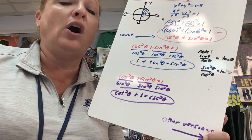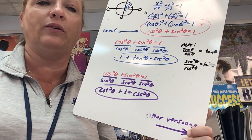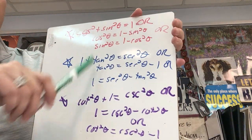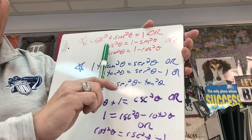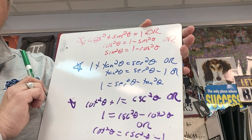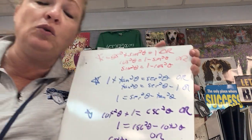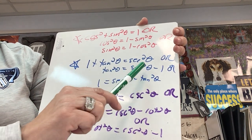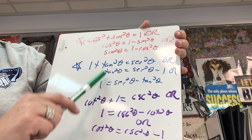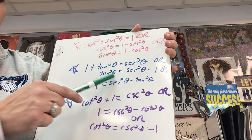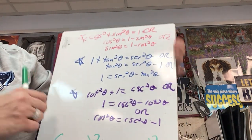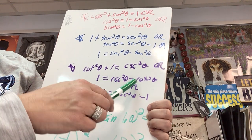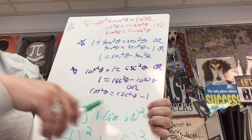We also need to recognize different versions of these identities. From cos²θ + sin²θ = 1: cosine squared equals 1 minus sine squared, and sine squared equals 1 minus cosine squared. From 1 + tan²θ = sec²θ: tangent squared equals secant squared minus 1, or 1 equals secant squared minus tangent squared. From cot²θ + 1 = csc²θ: cotangent squared equals cosecant squared minus 1, or 1 equals cosecant squared minus cotangent squared. You may want to add these versions to your identity sheet.